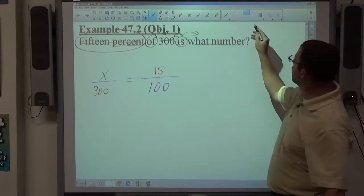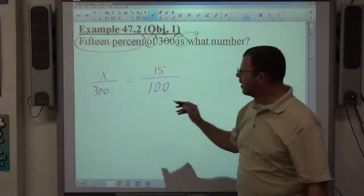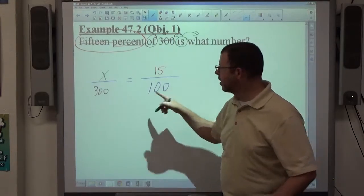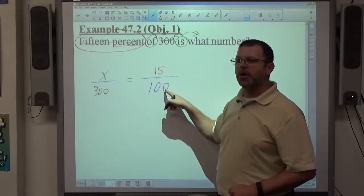Objective 2, cross-multiply. Going back to what Preston asked for the last problem, if I see reduction possibilities, for example, 15 and 100 both divided by 5, that's legal. 300 and 100 both divided by 100, that's also legal.